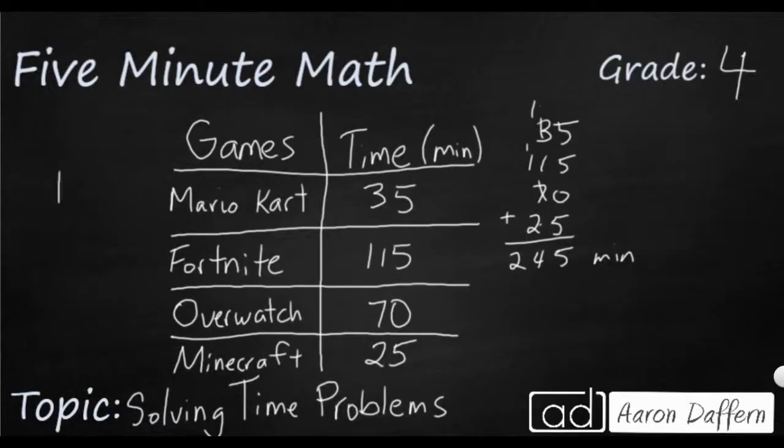So the only thing we need to know is that one hour equals 60 minutes. Now there's various ways we can do this to get groups of 60 out. Let me show you two different ways. One would be you simply just take out each 60. So I'm going to do repeated subtraction. And each time I take a 60 out, I'm going to circle it because that's going to be an hour.